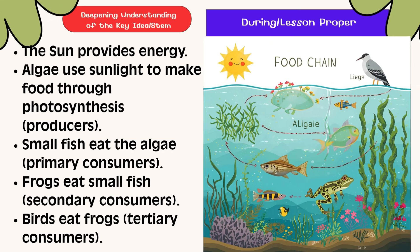The sun provides energy. Algae use sunlight to make food through photosynthesis — they are the producers. Small fish eat the algae; they are the primary consumers. Frogs eat small fish; they are called the secondary consumers. Birds eat frogs; they are called the tertiary consumers.